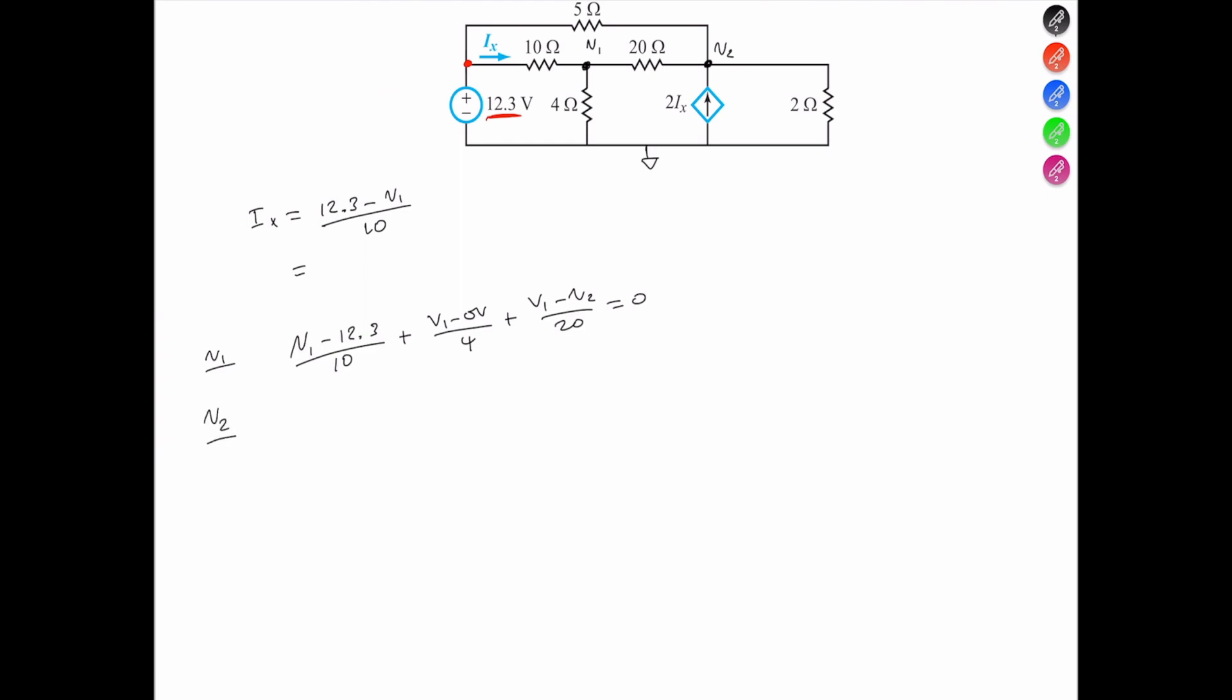Next equation is KCL at V2. So V2 with reference to V1, and that's divided by 20 ohms.